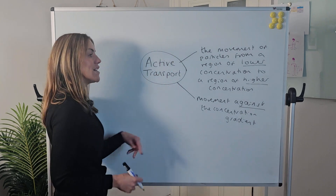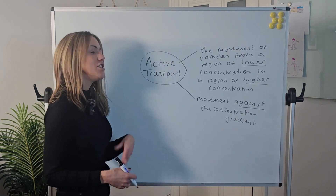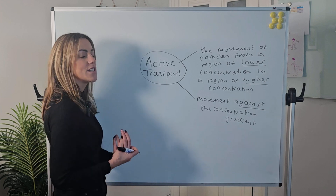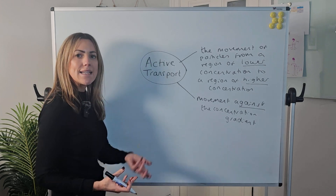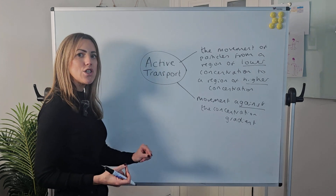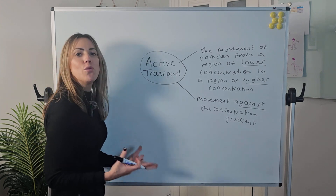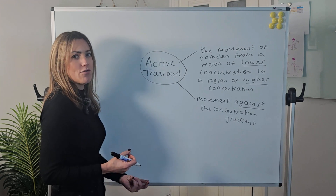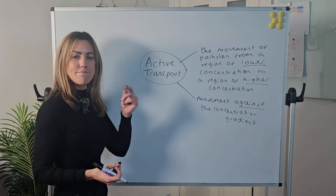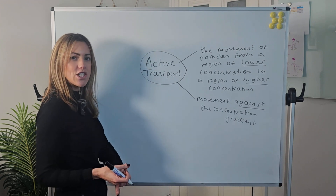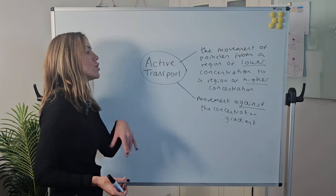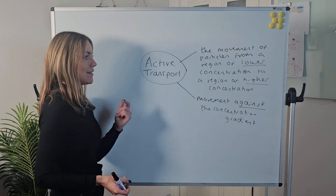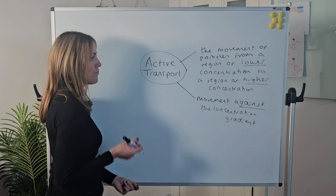At GCSE you will have looked at examples such as mineral ions moving into root hair cells against their concentration gradient — so from a lower concentration in the soil to a higher concentration inside the root hair cell itself.